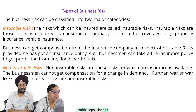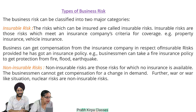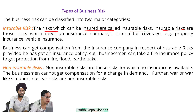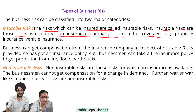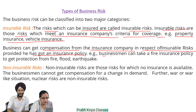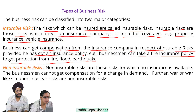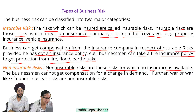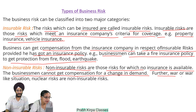Other causes include unforeseen events like political disturbances, mechanical failures such as the bursting of a boiler, and fluctuations in exchange rates. Types of business risk: business risks can be classified into two major categories. Insurable risk: the risk which can be insured is called insurable risk — for example, property insurance and vehicle insurance. Business can get compensation from the insurance company in respect of insurable risk provided it has bought an insurance policy, such as a fire insurance policy against fire, flood, or earthquake. Non-insurable risk: those risks for which no insurance is available — for example, a change in demand, war situations, or nuclear risks.